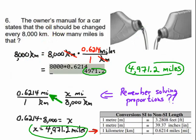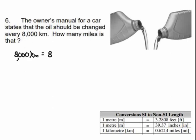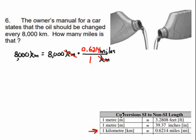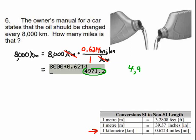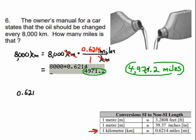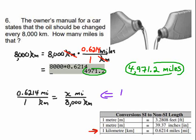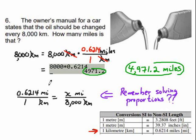Knowing how to convert units is important — for example, if you're trying to change the oil in your car. So 8,000 kilometers is the same as how many miles? We always give you the conversion table — one kilometer equals 0.6214 miles. Write it down before you grab your calculator, and you get 4,971.2 miles. Or you could use the proportion method — do you remember doing proportions? Just like making recipes. You end up with 4,971.2 miles.